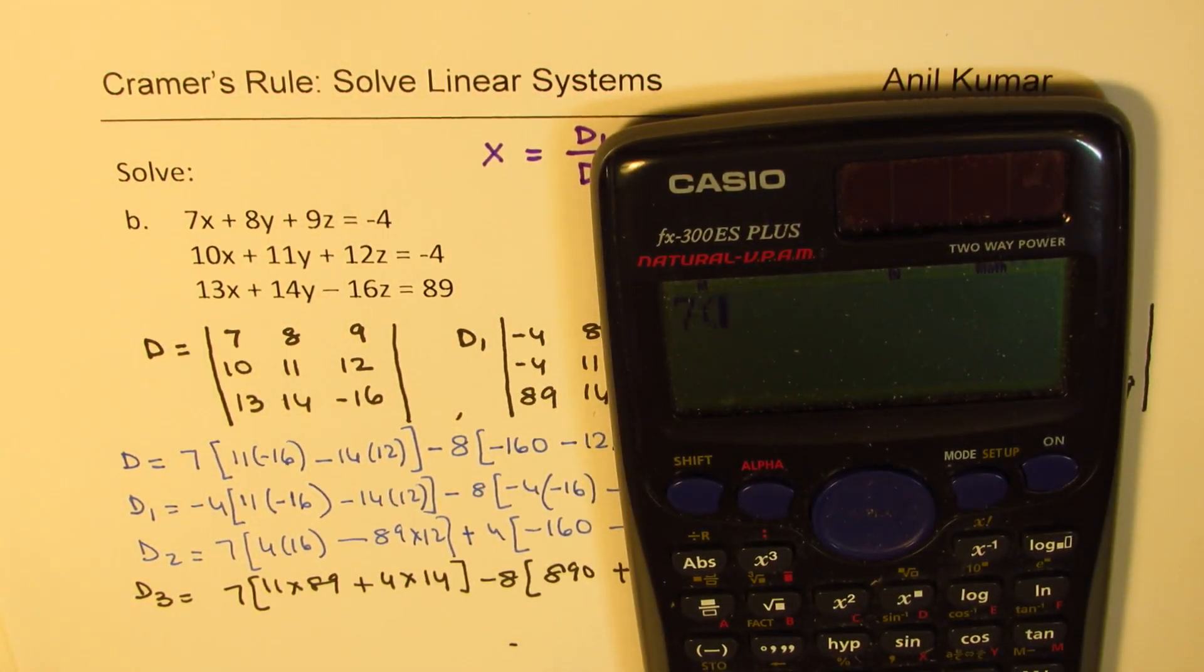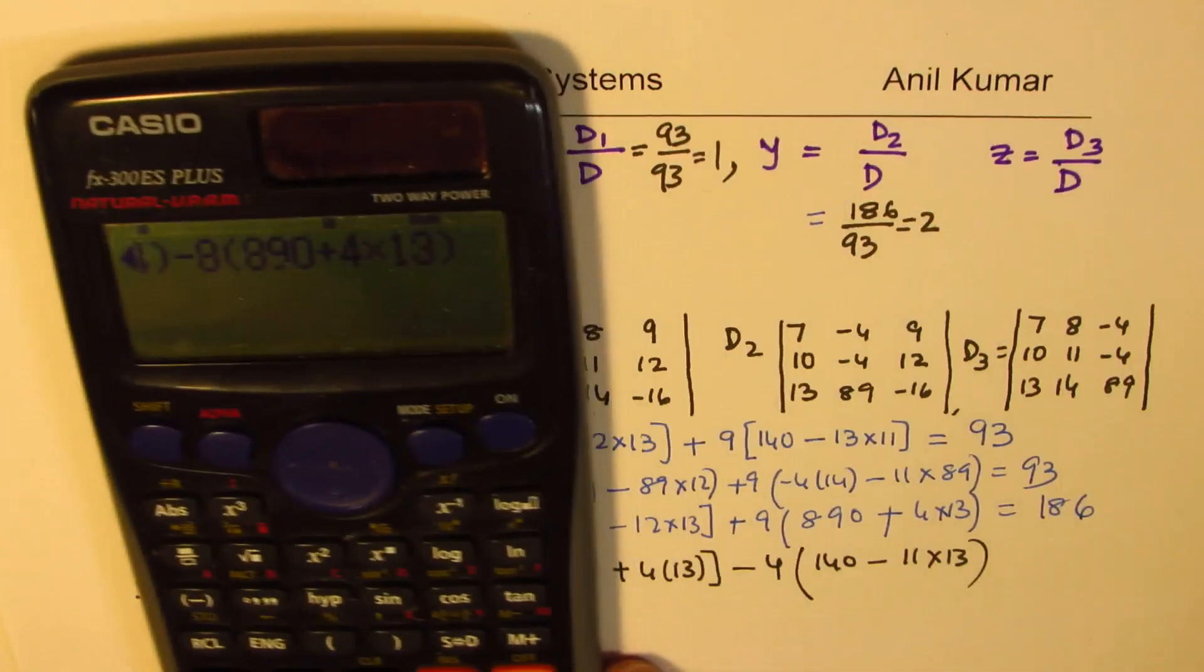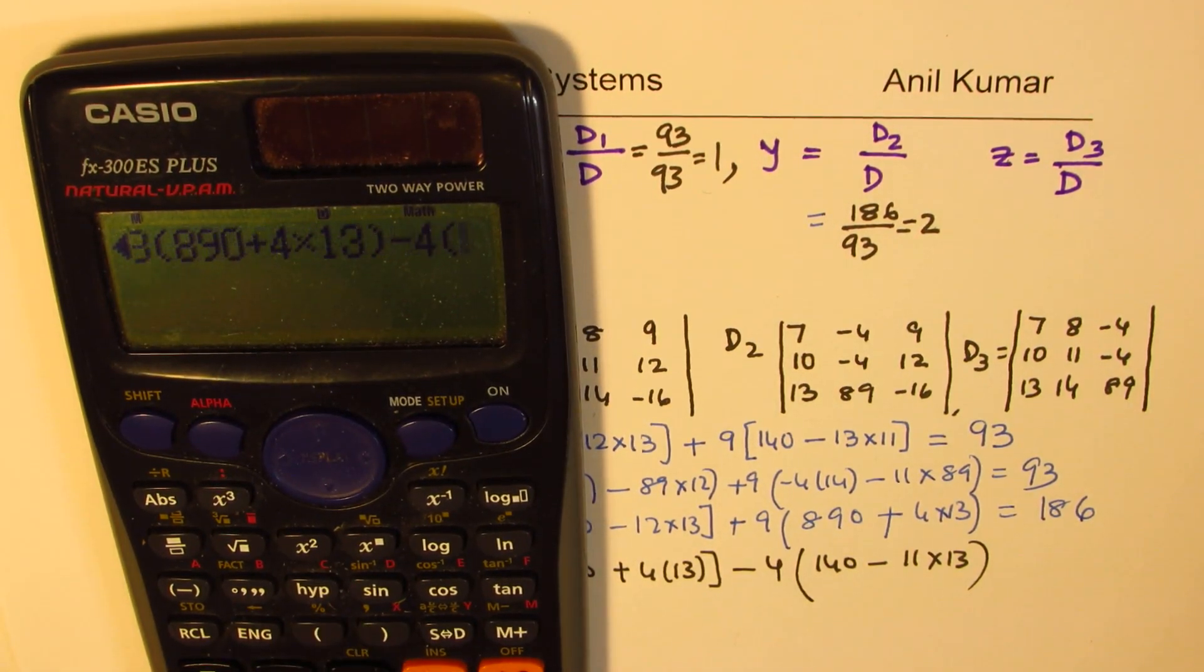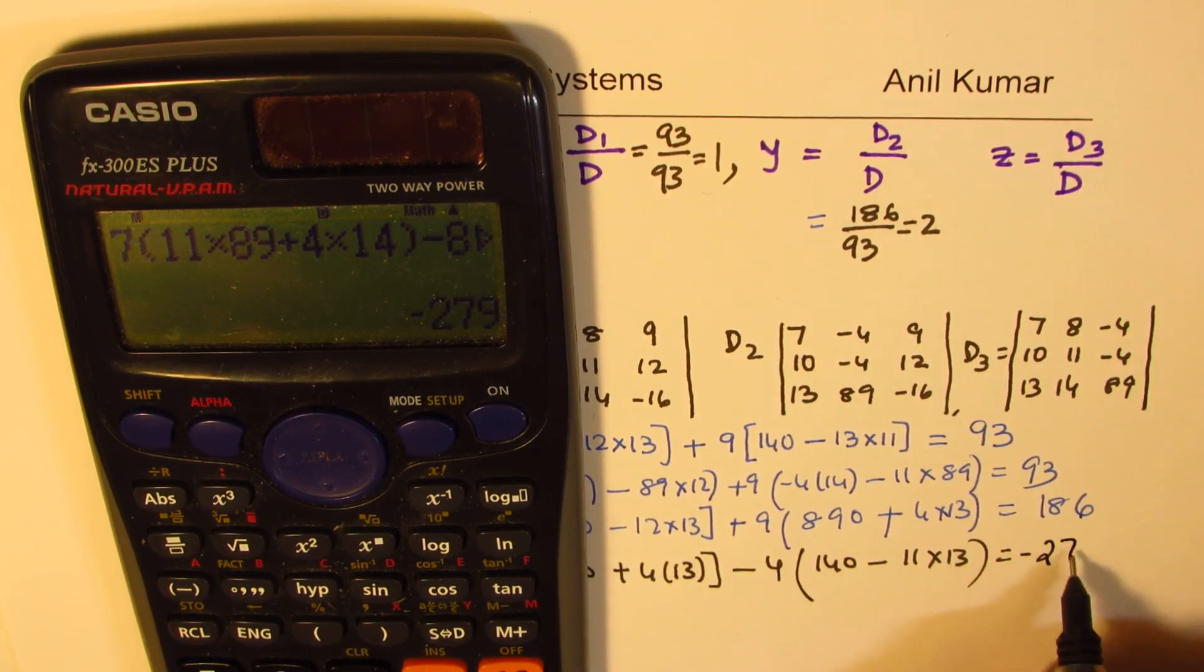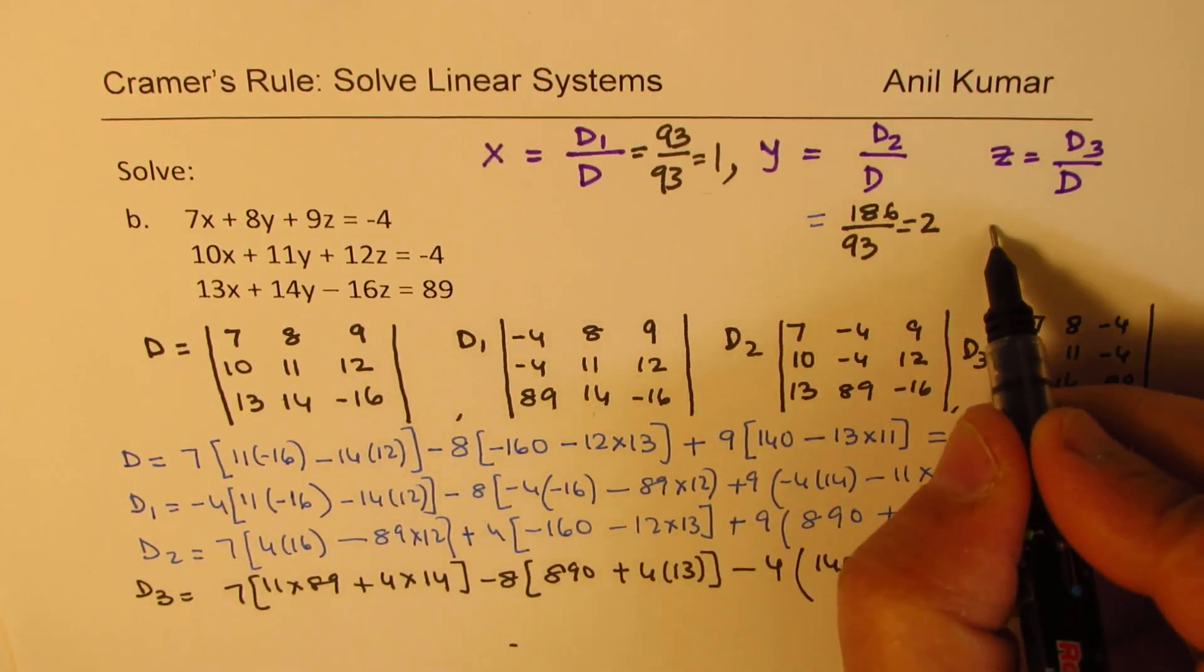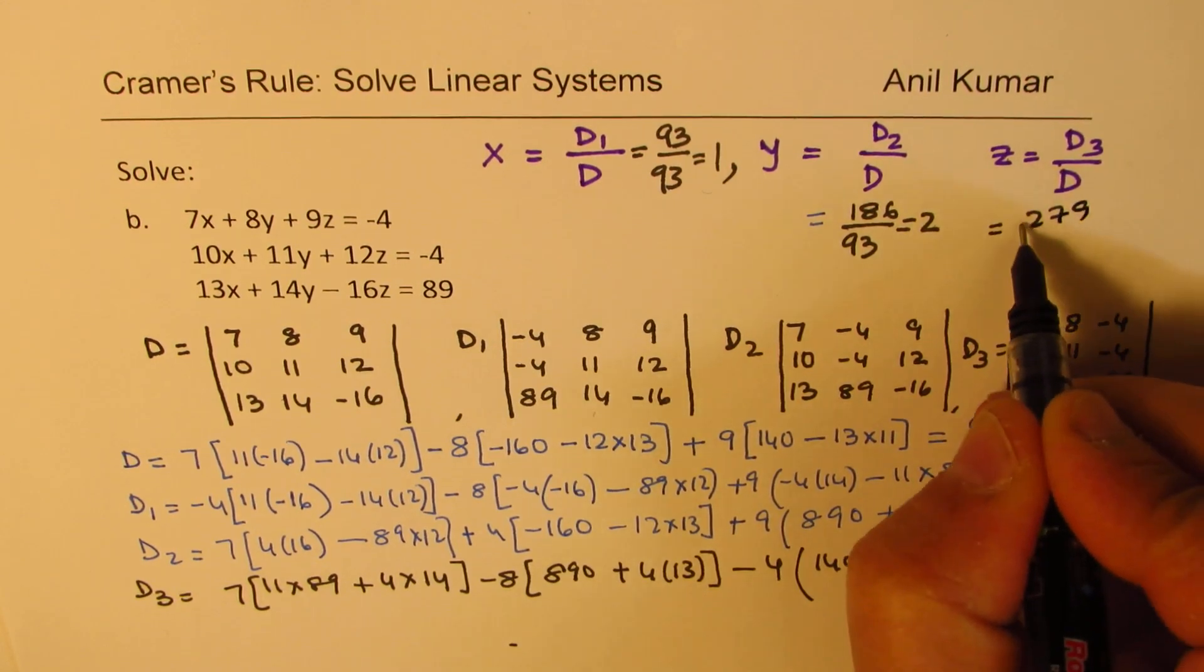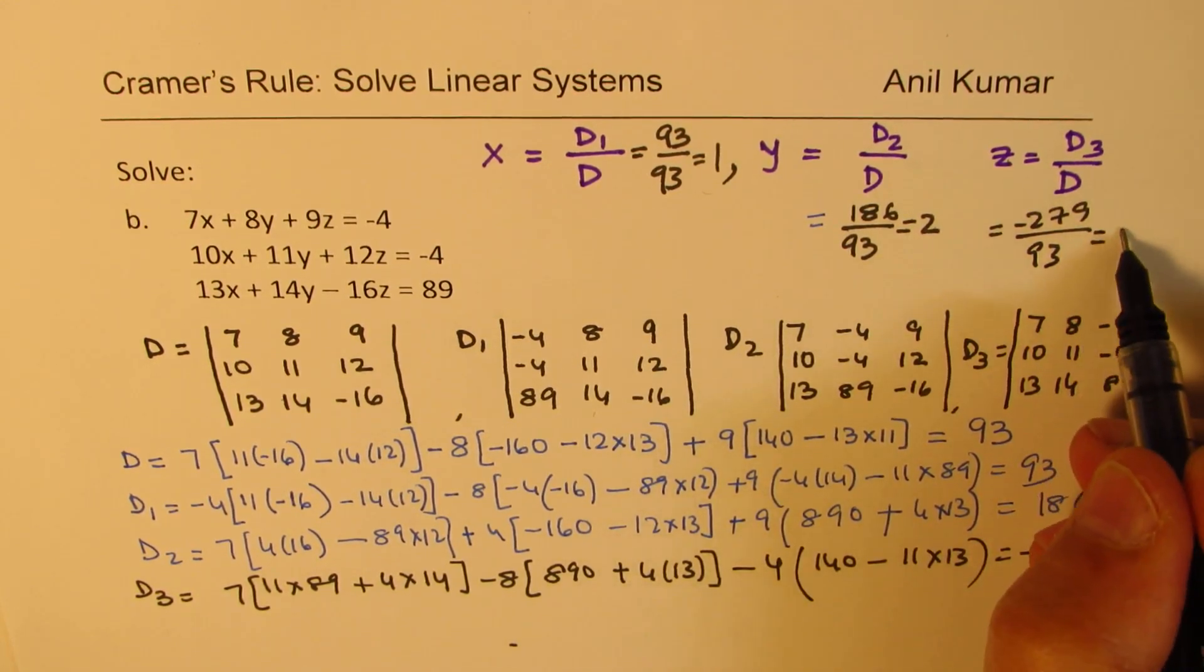So, that gives you 7, within brackets, 11 times 89, plus 4 times 14, bracket close, minus 8. And within brackets, you get 890 plus 4 times 13, bracket close. And then, you have minus 4, within brackets, 140 minus 11 times 13, bracket close, equals to. So, this time, we get a negative number, 279. Is that clear? So, what you realize is that it's a simple calculation. So, for z, we get 279 with a negative sign over 93. So, what is that equal to? So, that seems to be 3 times. So, we get -3.